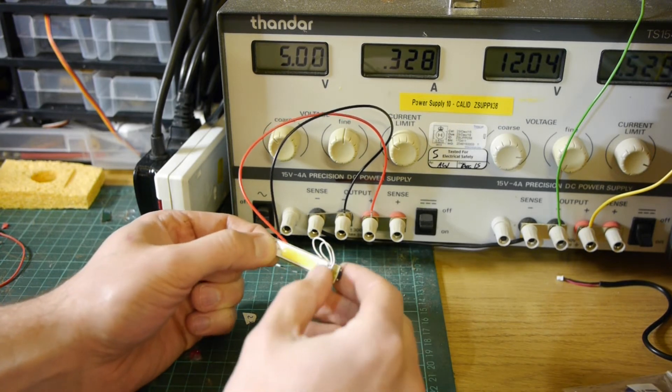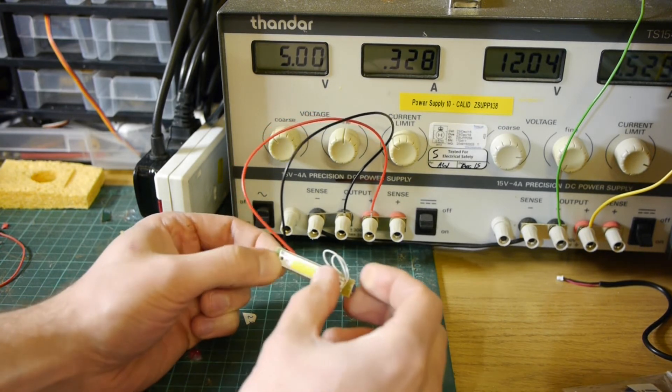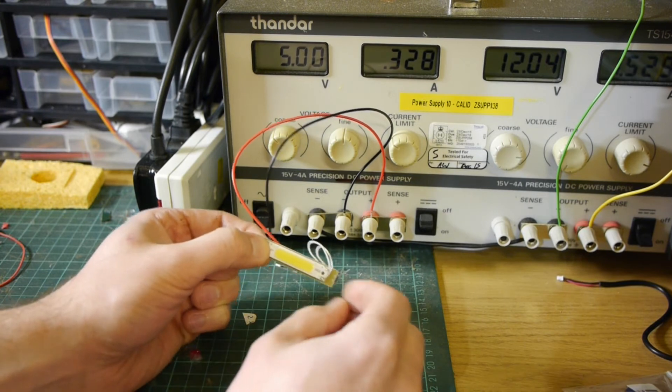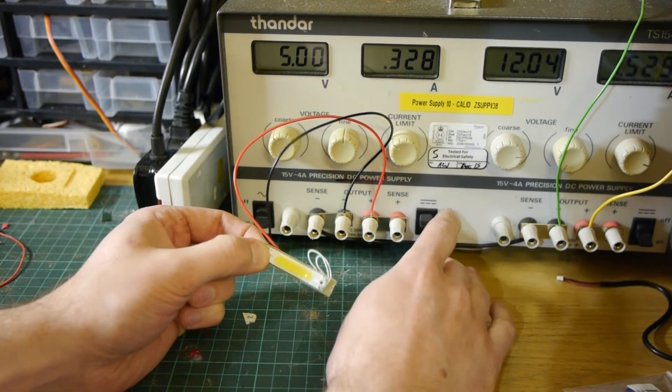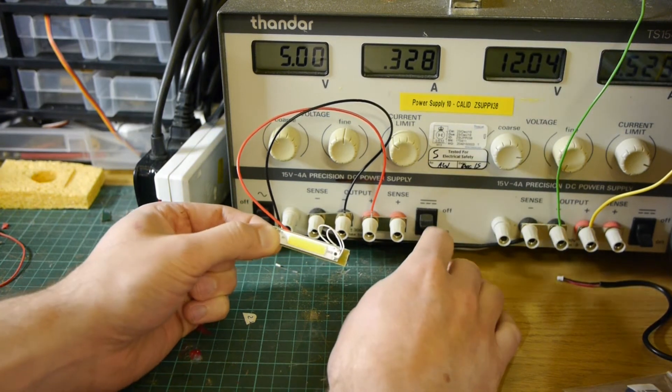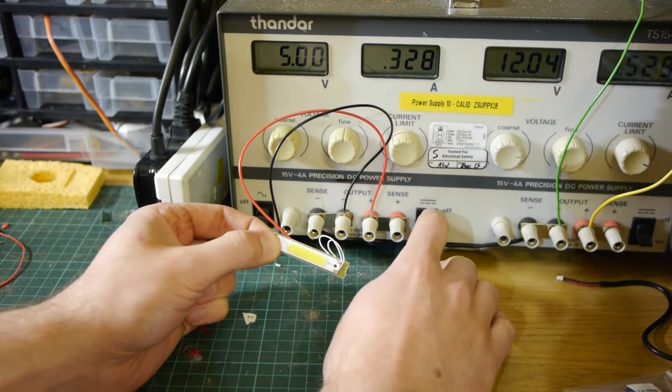But I think for just being able to see the plane half watt is actually quite bright so hopefully that'll be plenty. The ones I've ordered from China are actually three watt so they should be even brighter again.